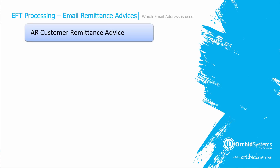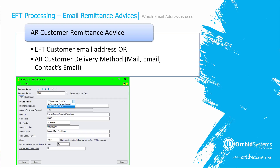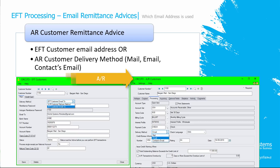For AR customer remittance advices — for AR refunds and AR direct debits — on the EFT record you can specify an email address or specify the AR customer delivery method, which is mail, email, or contacts email. On the EFT customer, if you select the EFT customer email-to delivery method, it uses the email-to on the EFT customer record. If you select the AR customer delivery method, it will go to the AR record and check whether the delivery method is mail, email, or contacts email, and will either print or email to the customer address, email address, or contacts email address.